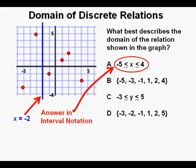What about this vertical line shown in blue at x equals negative 2? Does it touch any of those points in red? Since it does not touch any of the points, x equals negative 2 is not part of the domain.